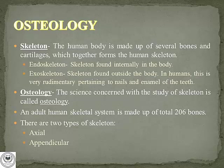So what is Osteology? The human body is made up of several bones and cartilages, which entirely constitute the human skeleton. It is of two types: endoskeleton and exoskeleton. Endoskeleton is found internally in the body, while exoskeleton is found outside. In humans, the exoskeleton is very rudimentary, pertaining only to nails and the enamel of the teeth. The science concerned with the study of the skeleton is called Osteology, and an adult human skeletal system is made up of a total of 206 bones.